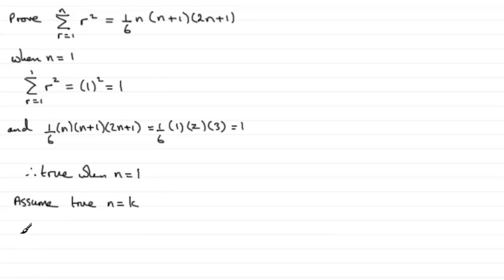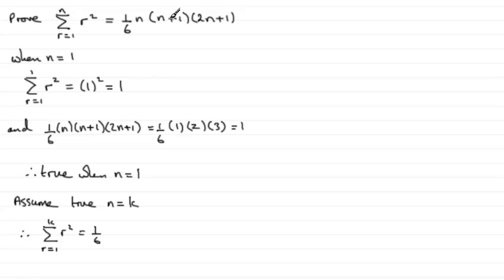Assume true for n equals k. That means we can say that the sum of r squared going from 1 to k equals one sixth k multiplied by k plus 1 multiplied by 2k plus 1.